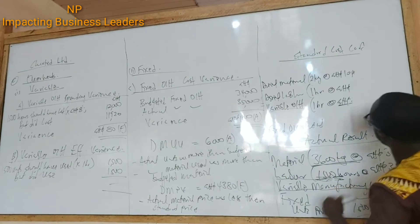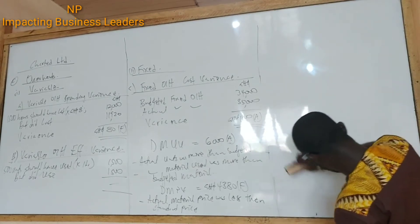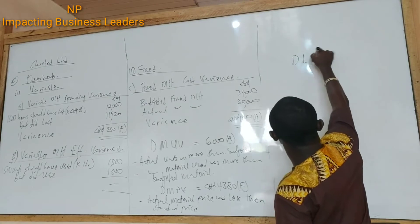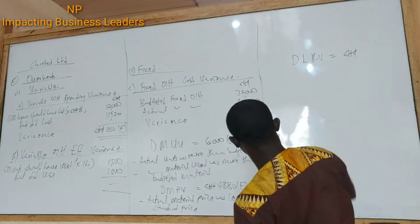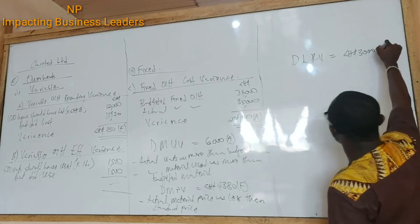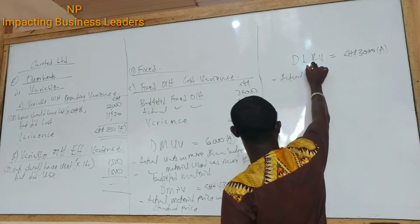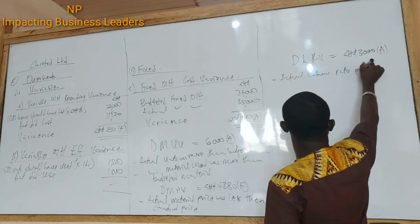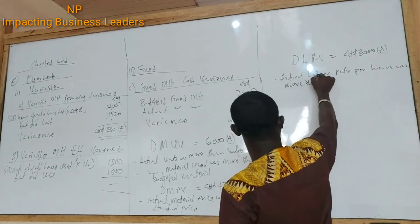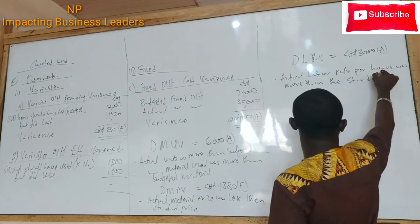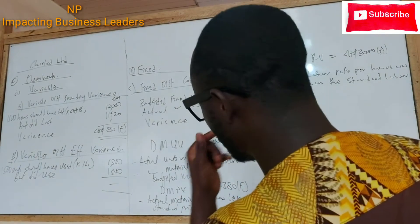Because of the price. Then we come to direct labor rate variance. What did we get for the labor rate variance? What could be the reason for it? It's because of the payments, so it could mean that the actual labor rate per hour was more than the standard rate. That could be one of the reasons in relation to that.